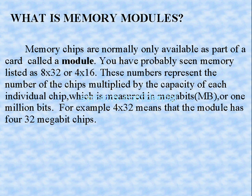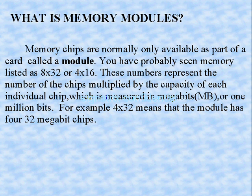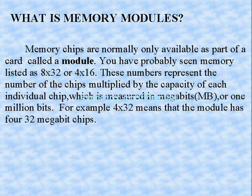What is a memory module? Memory chips are normally only available as part of a card called a module. In a very big design there will be memory chips in a single module. Memory is listed as 8 by 32 or 4 by 16, where 8 indicates the depth and 32 indicates the width of each word. These numbers represent the number of chips multiplied by the capacity of each individual chip, measured in megabytes or million bits.